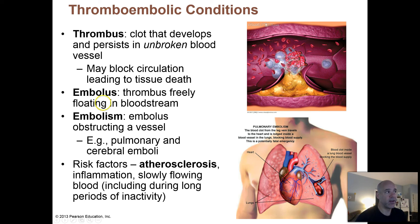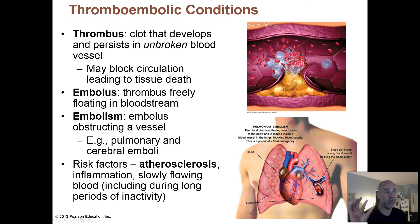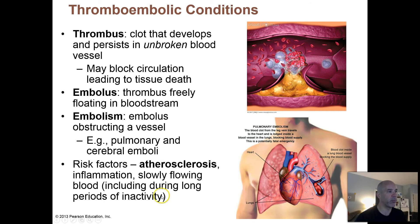Sometimes those clots can detach. Veins bring blood back to your heart, and then your heart pumps the blood out to the lungs so it can become oxygenated. So if you have an embolus that gets pumped by the heart out to the lungs, it can get trapped in blood vessels within the lungs. If it's a big enough clot, it can cut off the blood supply to the majority of one lung and that can be fatal. You can also have cerebral emboli — where clots get trapped in an artery leading to the brain — which can also be fatal or cause a serious stroke.